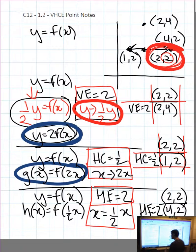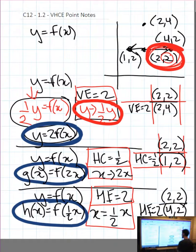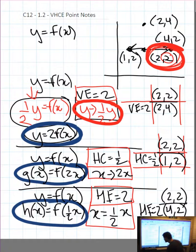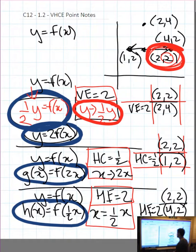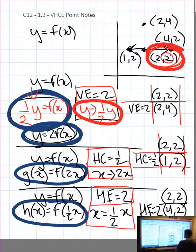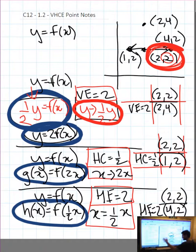That same sentence applies to h of x: do the opposite of what you see inside the brackets to the x value. So if I see 1/2 x attached to the variable, I know that's a horizontal expansion of 2. The last sentence: do the opposite of what you see on the left-hand side to the y value. So if we have 1/2 y equals f of x, it's attached to the variable, so we always do the opposite. Get comfortable with the operation attached to the variable — it's always the opposite. And y has the case where you can do algebra to get it onto the right-hand side.